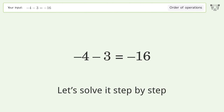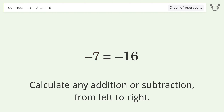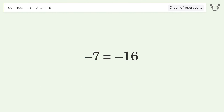Let's solve it step by step. Calculate any addition or subtraction from left to right. Negative 4 minus 3 equals negative 7, and so the final result is negative 7 equals negative 16.